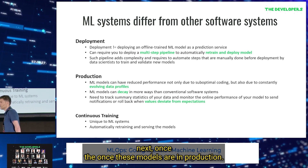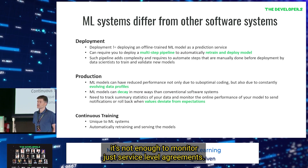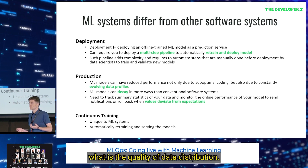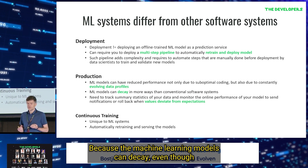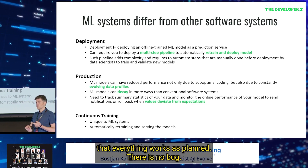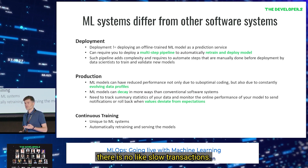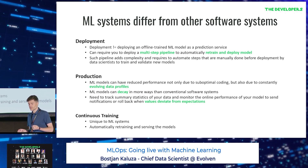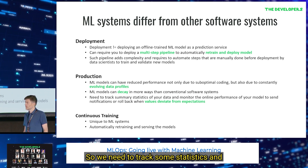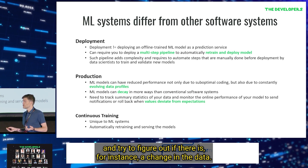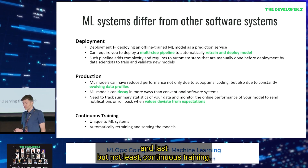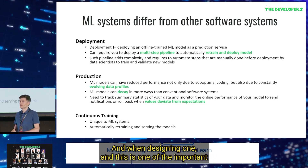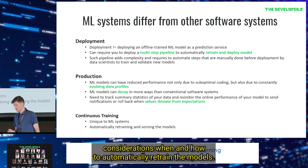Once these models are in production, it's not enough to monitor just service level agreements or response time. We also need to monitor the quality of predictions and the quality of data distribution, because machine learning models can decay. Even though everything works as planned — no bugs, no slow transactions, no errors — the models can still return wrong predictions. So we need to track statistics and figure out if there is a change in the data. And last but not least: continuous training. This is unique to machine learning systems, and when designing one, an important consideration is when and how to automatically retrain the models.